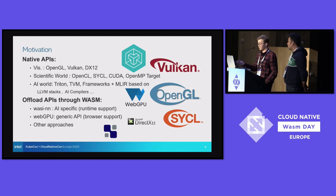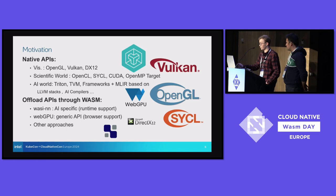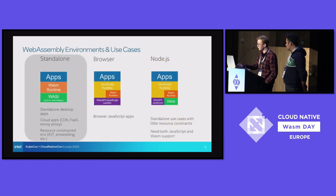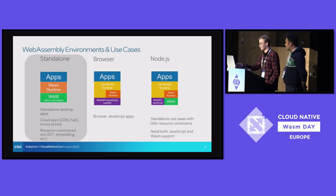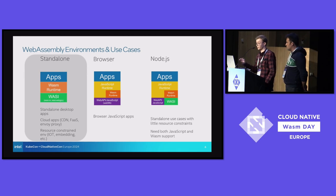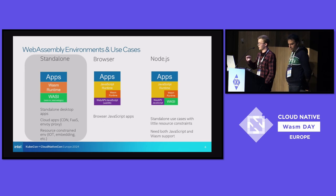In terms of actual currently existing offload APIs for Wasm, the two main ones are WasmNN, which we'll get into right after this, and WebGPU, which is pretty common and probably well-known here already. There are also a lot of other offload APIs in the ecosystem. For WebAssembly environments: standalone means running your Wasm directly on the host, typically through something like WasmTime or any other Wasm runtime — use cases for standalone desktop apps, cloud applications, and resource-constrained environments. Another one is running through the browser, and there's also running through Node.js.